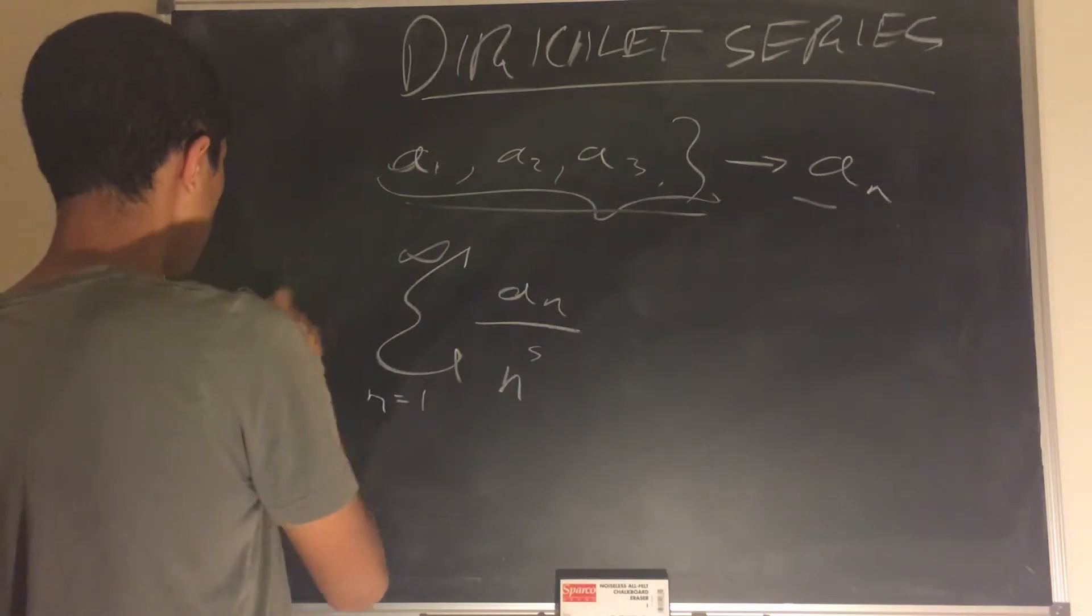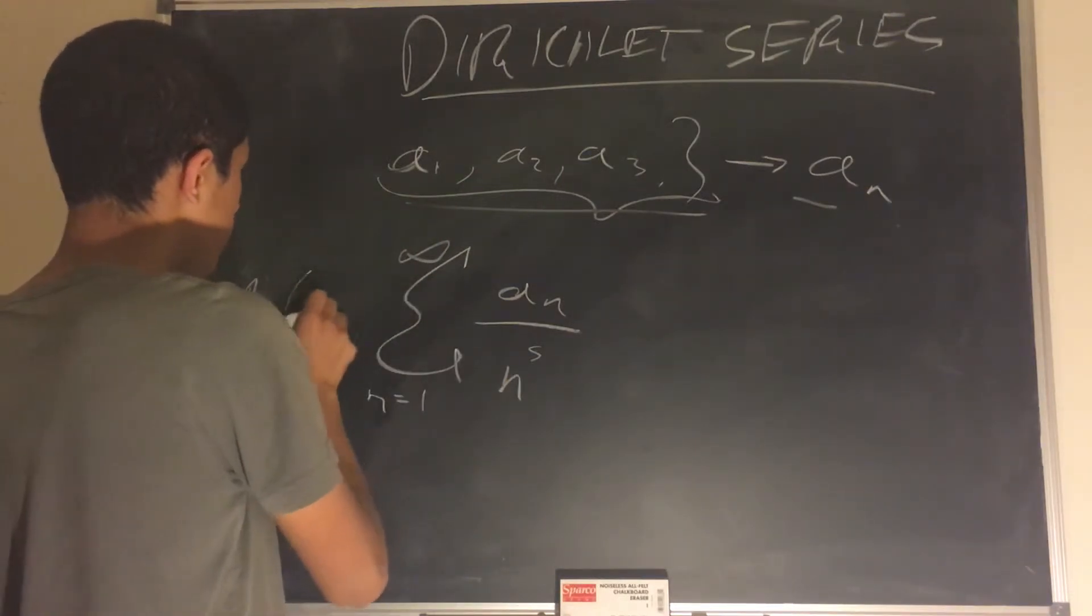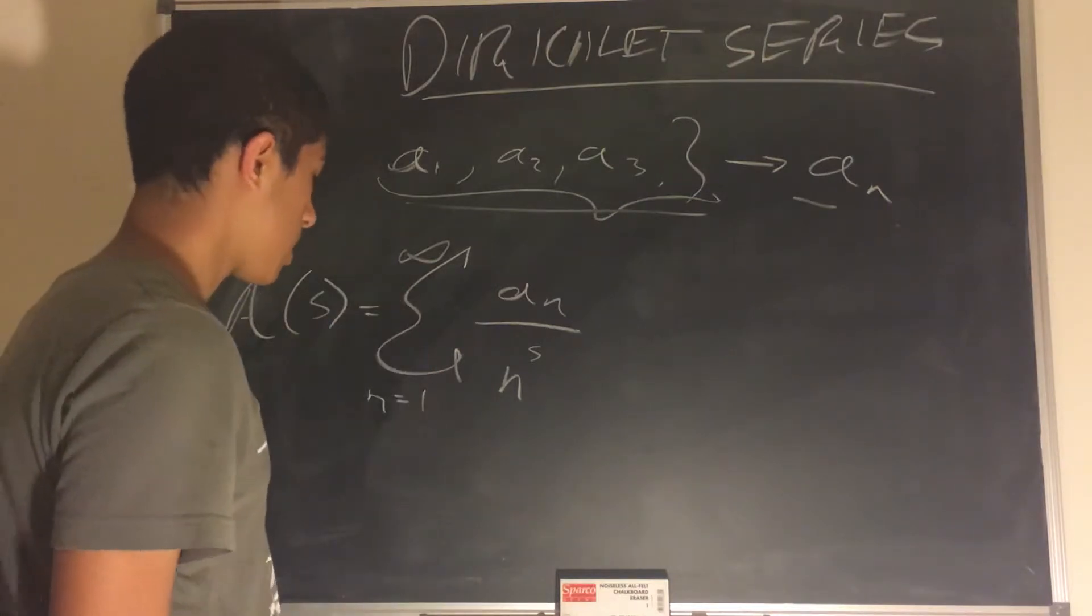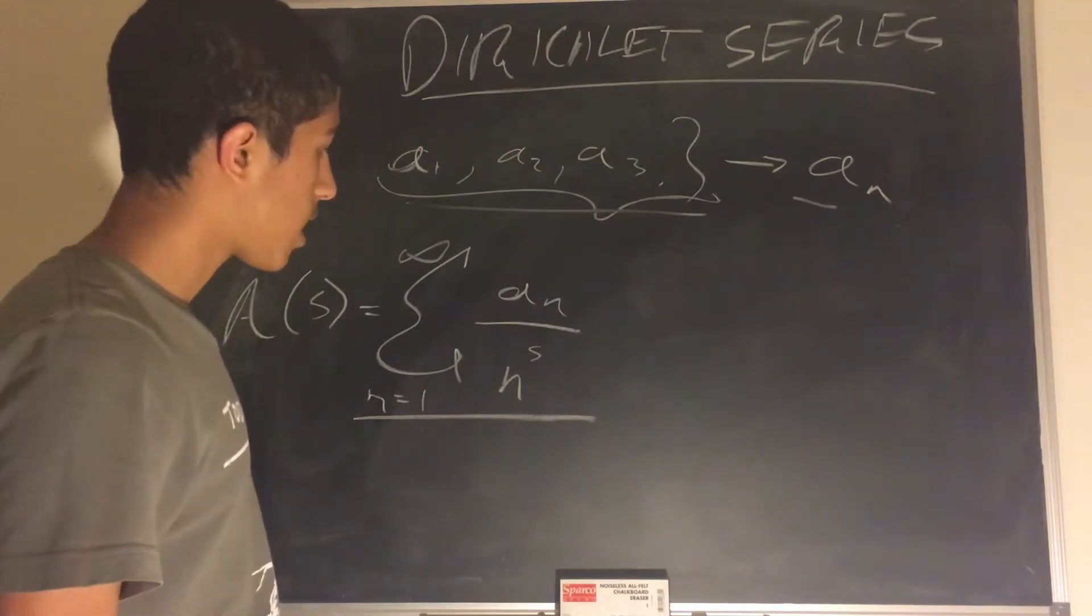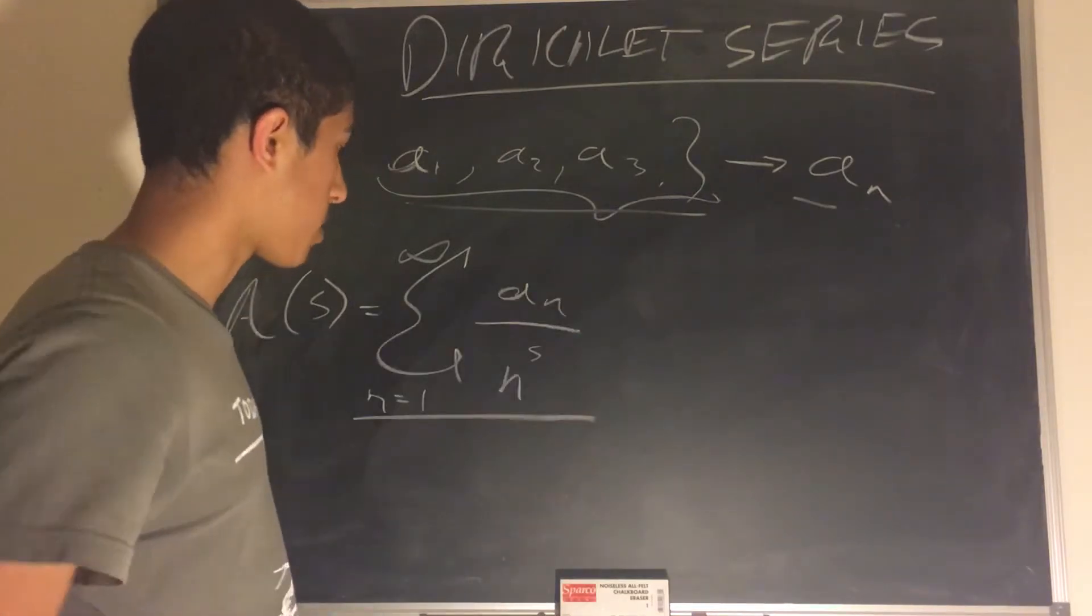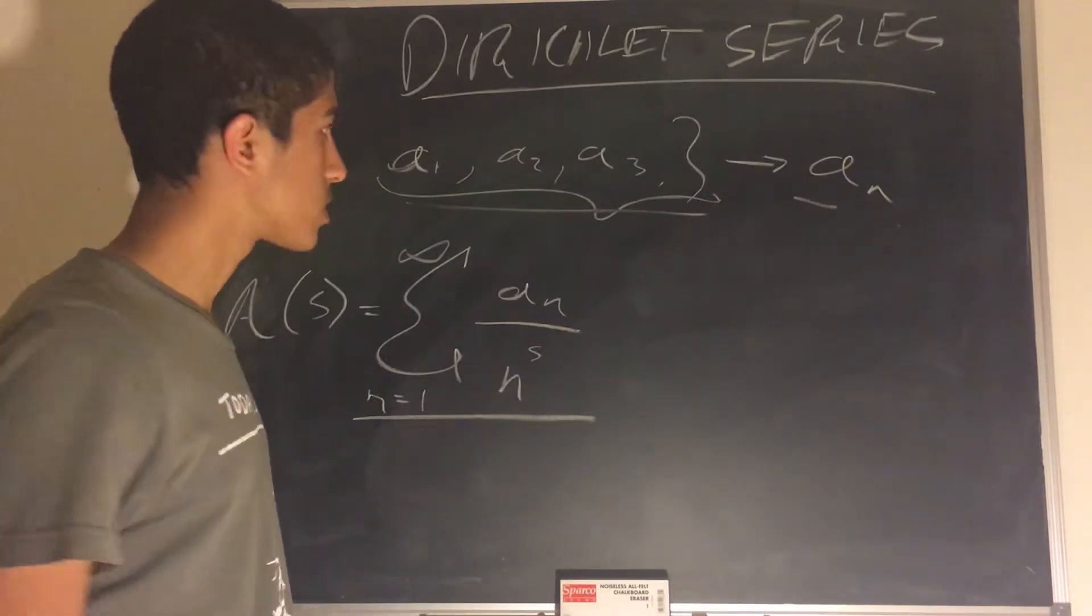So let's say capital A of s is equal to this sum over here, sigma n equals 1 to infinity, a sub n divided by n to the s. And that is the Dirichlet series for this sequence here.